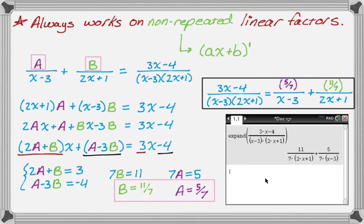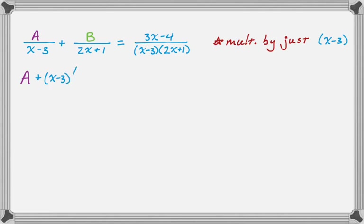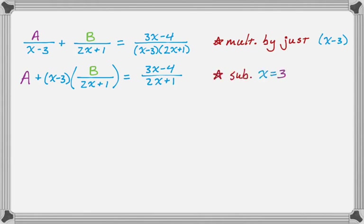Now let's see where the cover-up method comes from by solving the same problem again. Instead of clearing the entire denominator, I'm going to multiply everything by just x minus 3. I get A plus the quantity (x minus 3) times B over (2x plus 1) equals 3x minus 4 over 2x plus 1. Now if I make a clever substitution and let x equal 3 — which is the zero of the factor I multiplied through by — the x minus 3 term turns into zero.